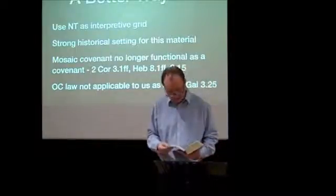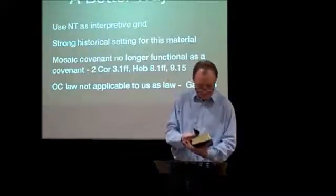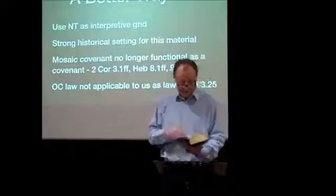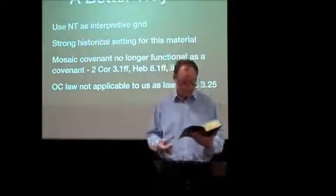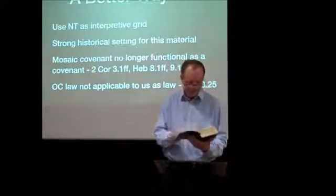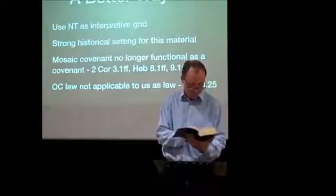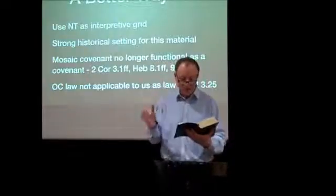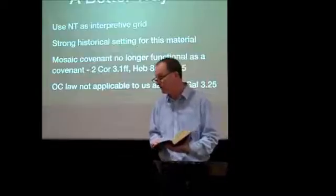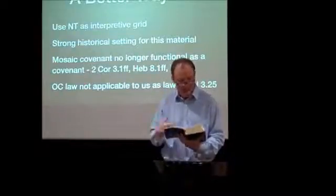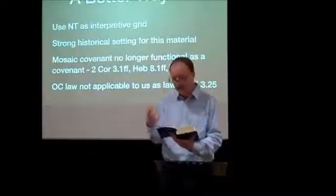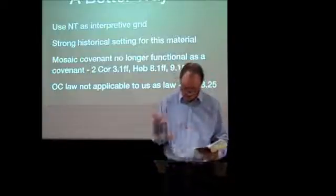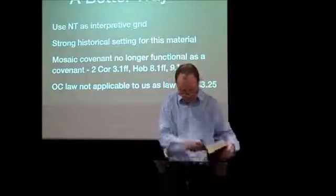Similarly, Hebrews chapter 8 — one of the great passages about the new covenant. After talking about Jesus as the high priest of the new covenant, he goes on to quote from Jeremiah 31. Verse 7: 'If there had been nothing wrong with that first covenant, no place would have been sought for another.' He talks about putting the law in their mind, writing it on their heart — 'I will be their God, they will be my people.' And by calling this covenant new, he's made the first one obsolete. What is obsolete will soon disappear. So we have the Mosaic covenant no longer functioning.